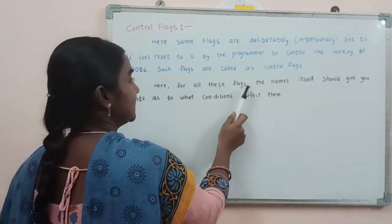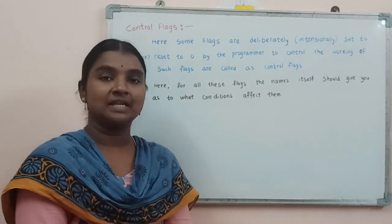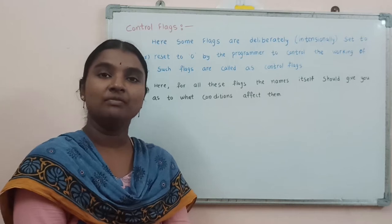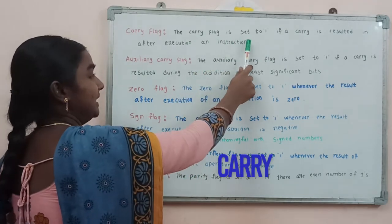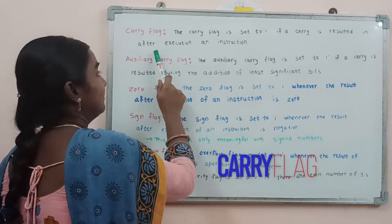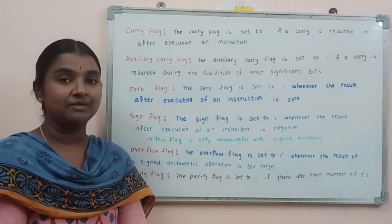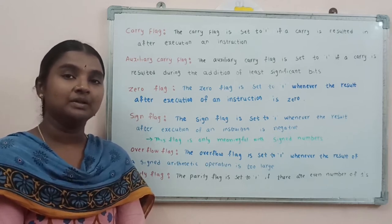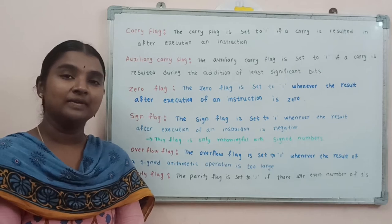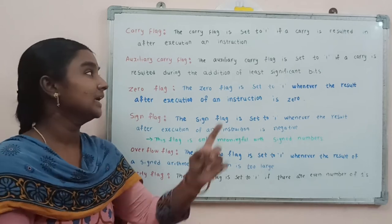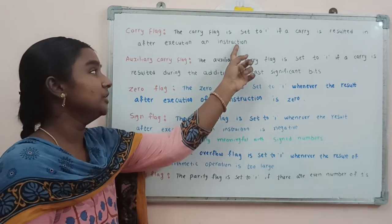For all these flags, the names themselves give hints as to what conditions affect them. Now about the carry flag: the carry flag is set to 1 if a carry results after execution of an instruction. For arithmetic instructions like ADD or logical instructions like compare — if we add two numbers and get a carry in the most significant position, this carry flag is set to 1. If there is no carry, it is reset to 0.